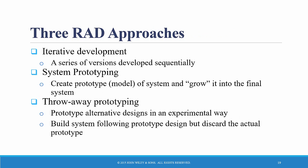There are at least three different flavors of RAD development. The first is so-called iterative development, which breaks the overall project into a series of versions that are developed sequentially. The second is so-called system prototyping, in which the analysis, design, and implementation phases occur concurrently in order to quickly develop a simplified version of the proposed system and give it to the users quickly for evaluation and feedback.